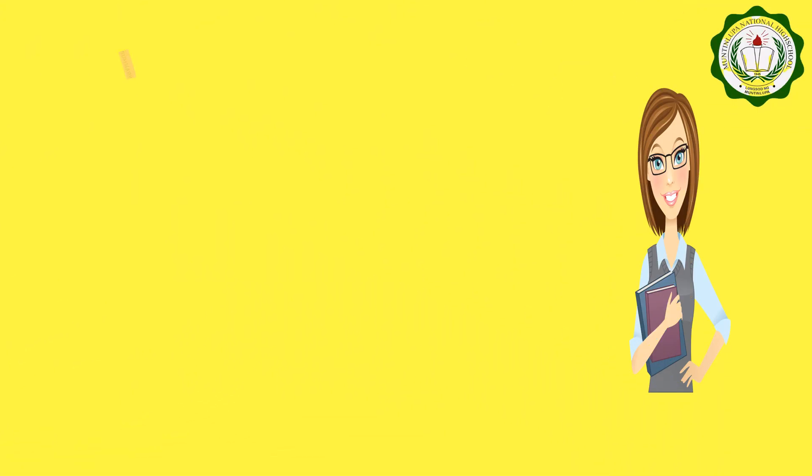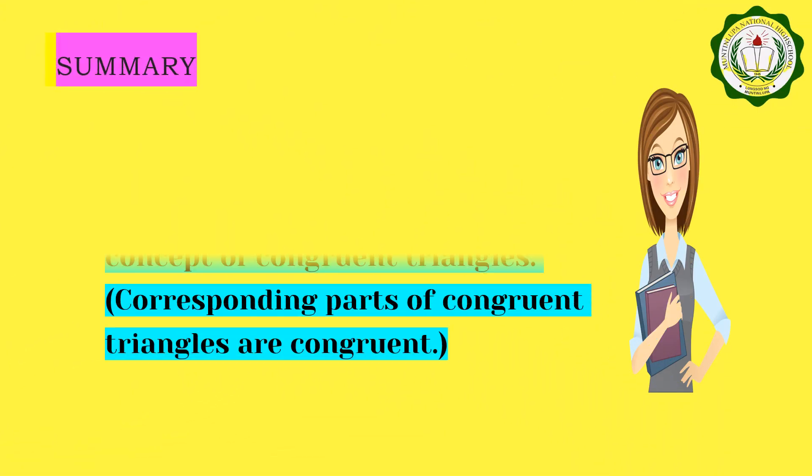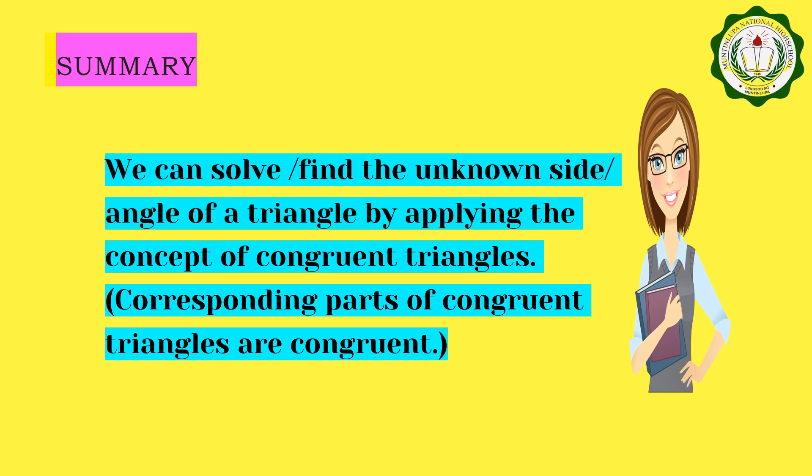For our summary: we can find an unknown side or angle of a triangle by applying the concept of congruent triangles, where the corresponding parts of congruent triangles are congruent.